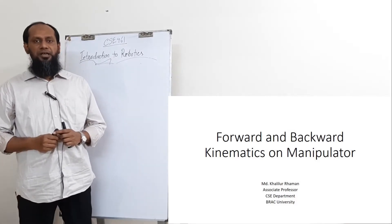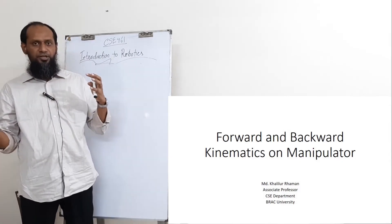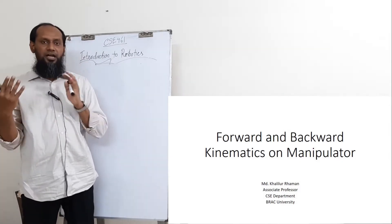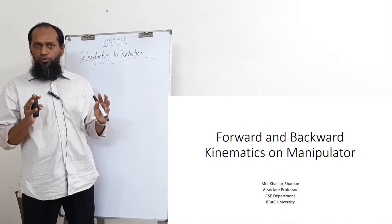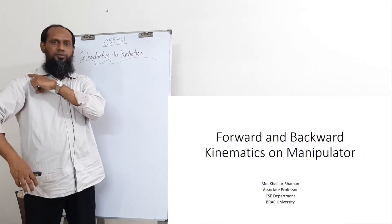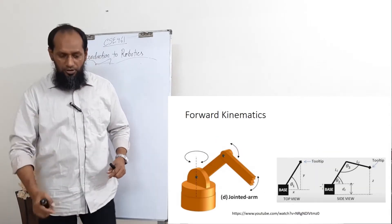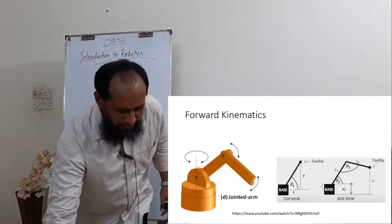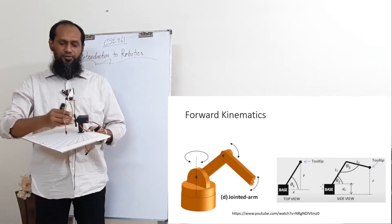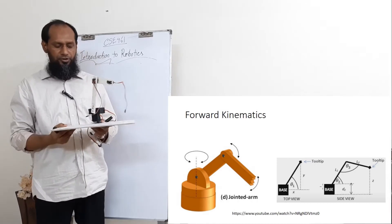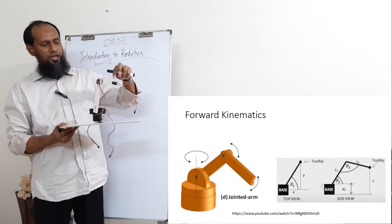Hello, my dear students, welcome back. Today we are going to discuss forward and backward kinematics on a manipulator. A manipulator moves from one part to reach a point. I have a manipulator built with a few servo motors — you can see here it has 3 degrees of freedom.